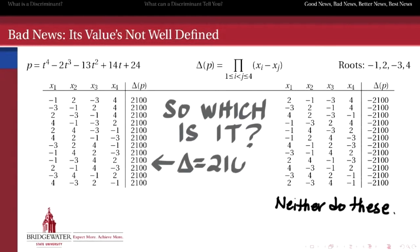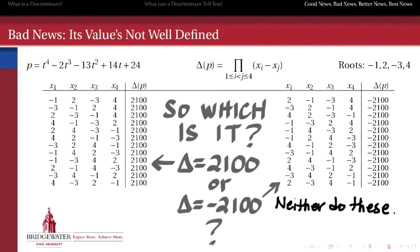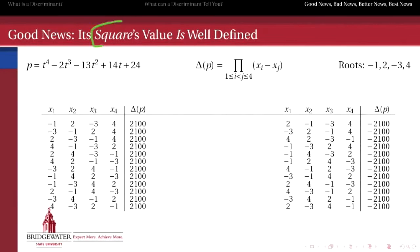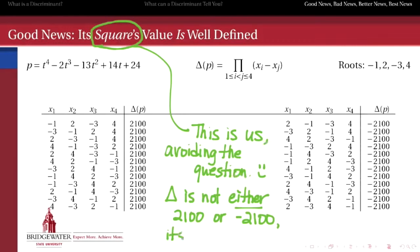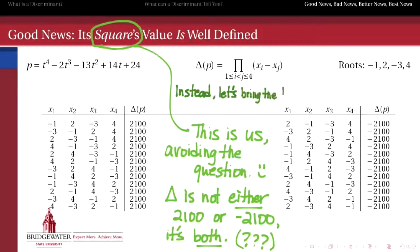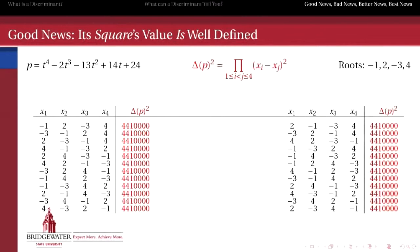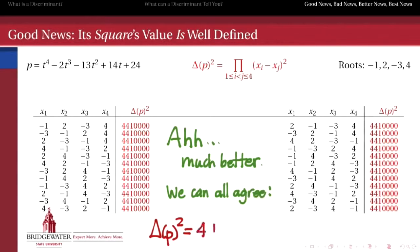So a student of algebra will ask: which is it? Is the discriminant of this polynomial positive 2100 or negative 2100? And like any good teacher that gets asked a question like that, we avoid it. We avoid the question by never thinking of the value of the discriminant in isolation. We don't care whether the discriminant is 2100 or negative 2100 — somehow it's both. But that's not very satisfying. We would like our discriminant-like object to have a single value we can all agree upon. So what we do is mediate by, instead of thinking of the discriminant, thinking of the square of the discriminant.